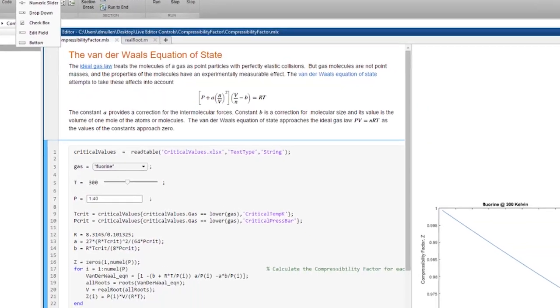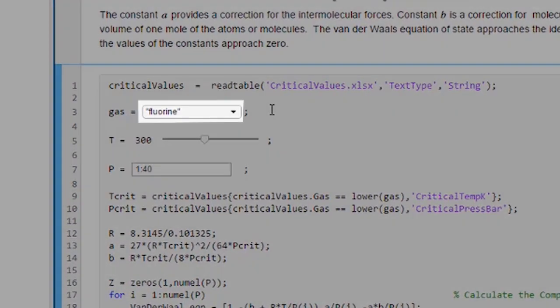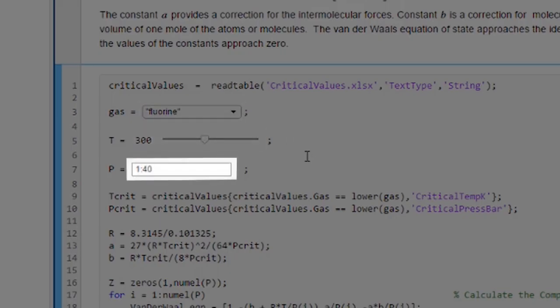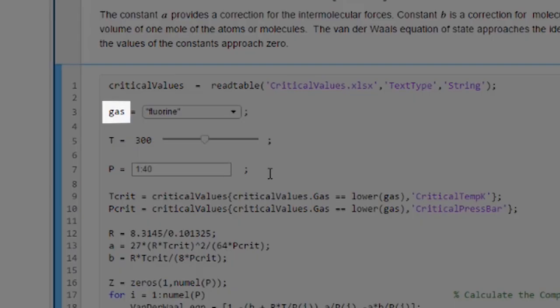For today's example, the van der Waals equation of state for gases, the only controls we will use are the drop-down menu, the slider, and the edit field. In the equation PV equals NRT, the drop-down menu controls the elemental type of gas used in the equation, the slider controls the temperature, and the edit field controls the pressure level of said gas.